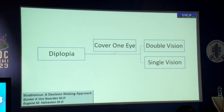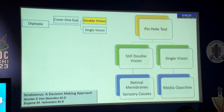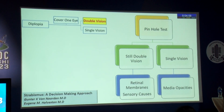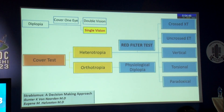The first basic step is to cover one eye to confirm whether you are dealing with double vision or single vision. If the patient still complains of double vision after covering one eye, it is monocular diplopia. The immediate test needed is the pinhole test. If the patient then sees single, it is due to media opacities; if still double, it may be due to retinal membranes or sensory causes.